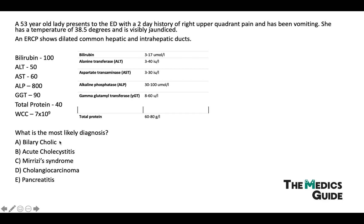Biliary colic typically causes right upper quadrant pain lasting 30 to 40 minutes but there is no jaundice. Similarly, with cholecystitis you don't really get jaundice either. Cholangiocarcinoma is an important differential, but given there's no history of weight loss, no B symptoms such as night sweats, tiredness, or fatigue, and given that cholangiocarcinoma usually causes painless jaundice, we can rule that out. Pancreatitis usually causes epigastric pain radiating to the back and typically no jaundice.